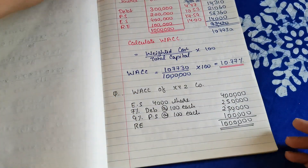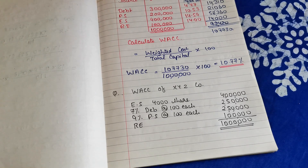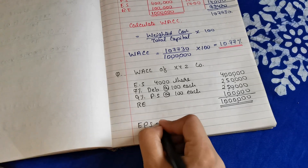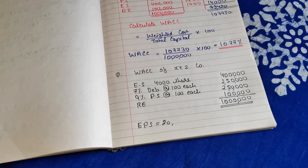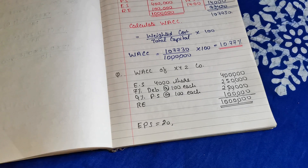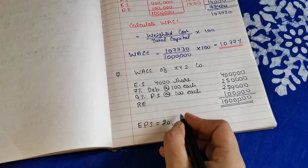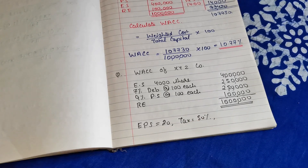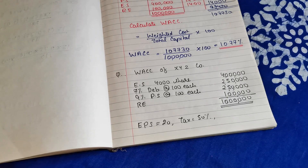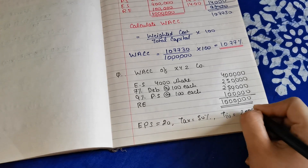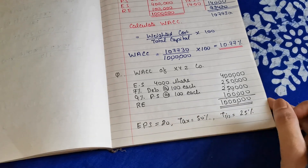Now let us understand the other information given in the question. The company has earned rupees 20 per share, so earning per share is rupees 20. The shares of the company are sold in the market at book value. The corporate tax rate is given as 50%. The individual shareholder's personal tax is 25%.